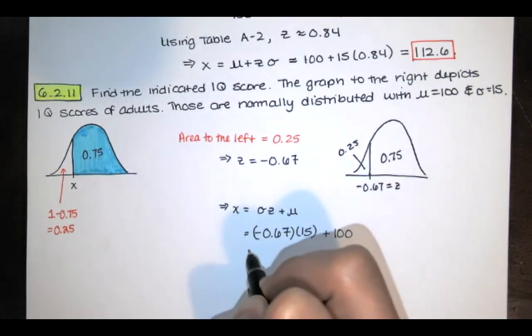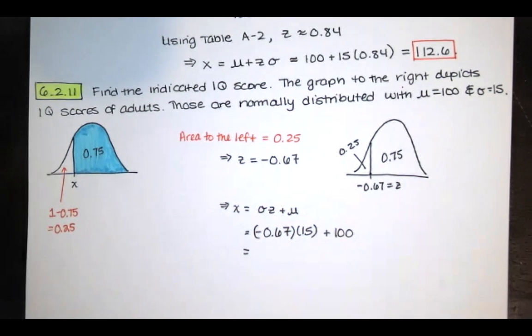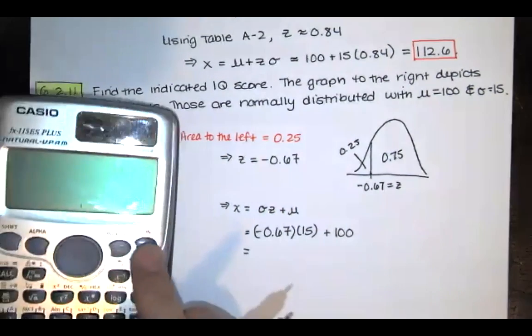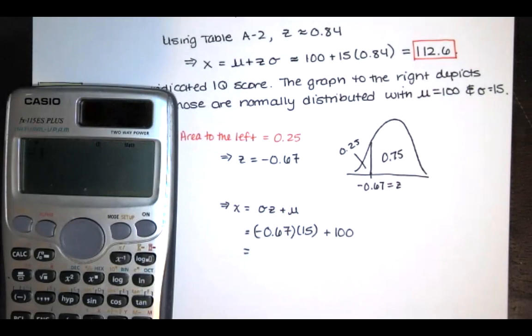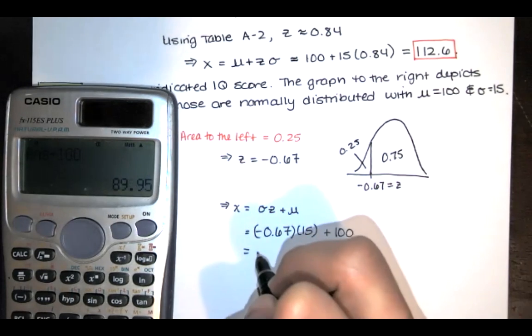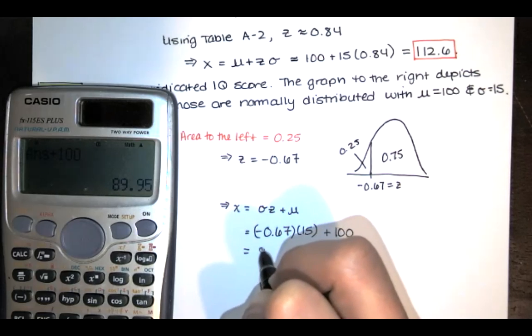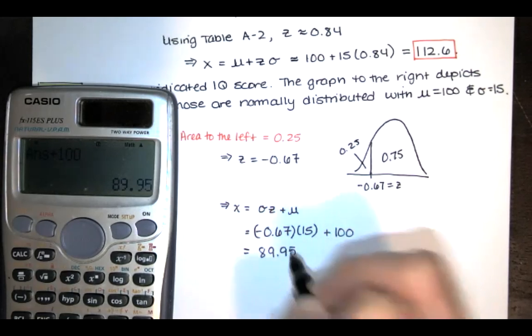And the mean in this case is 100, so this is going to be about 89.95 as our score.